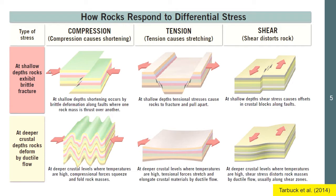Along faults or plate boundaries where one rock mass is thrust over the other. So if these two rock masses have a certain length and then there's compression, they are shortened — pushed closer to each other — resulting in one rock mass being displaced on top of the other.